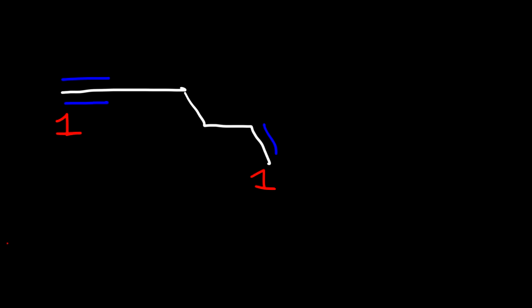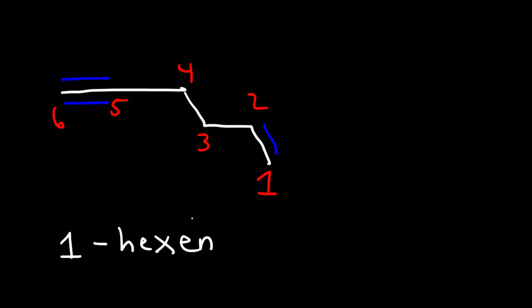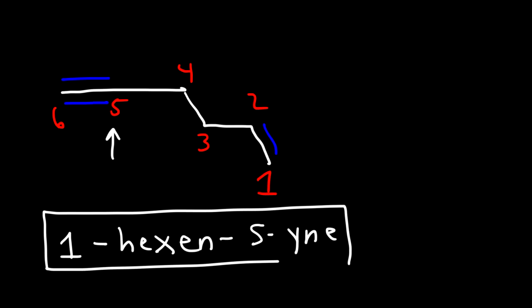What do you do when you have a molecule that contains both an alkyne and an alkene functional group? Which one has more priority? In this situation, the alkene has more priority, so we give the alkene the lower number. We have six carbons, so this is hexene rather than hexane. The alkene is at carbon 1 and the triple bond is on carbon 5, so this is called 1-hexen-5-yne.